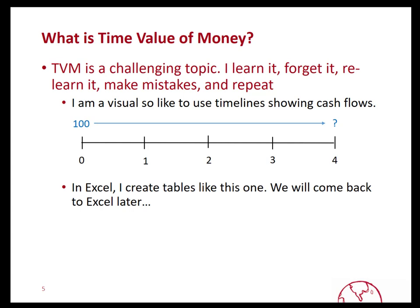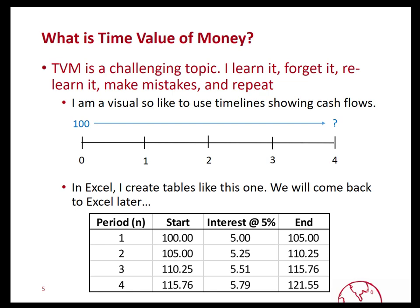In Excel, I would typically put together a table like this one. You can see: I invest $100, and let's assume the rate of interest is 5%. At the end of the first year it's going to be worth $105. That $105 will then be reinvested at 5%, it will earn slightly more interest — $5.25 — such that at the end of two years it'll be worth $110.25. This kind of table is useful for visualizing what is happening with your money.